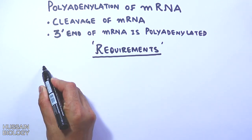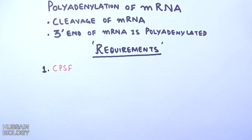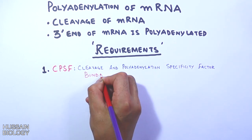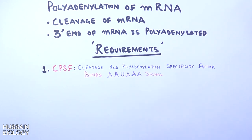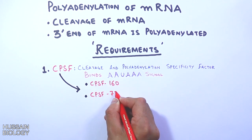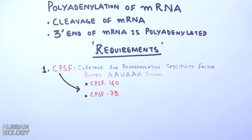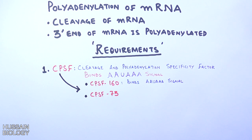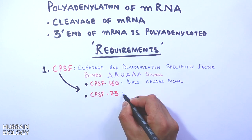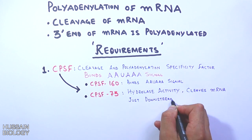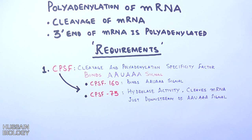First we need CPSF, that's cleavage and polyadenylation specificity factors. This binds to the AAU AAA signal on the mRNA molecule. There are mainly two CPSF factors: CPSF160 and CPSF73. It is the CPSF160 factor that binds the AAU AAA signal on the mRNA molecule, whereas CPSF73 has hydrolase activity and cleaves the mRNA just downstream of the AAU AAA signal, which we are going to see in the later part of the video.